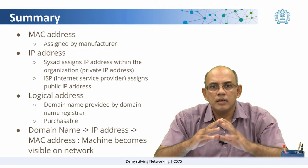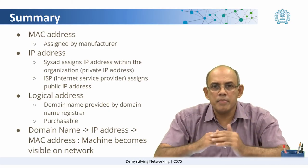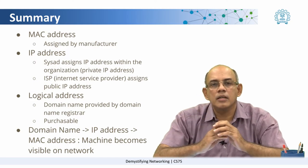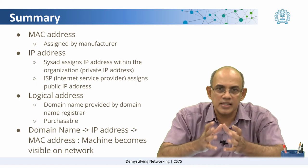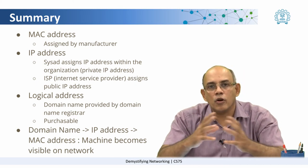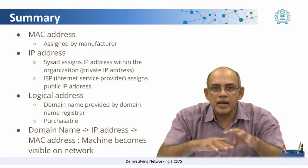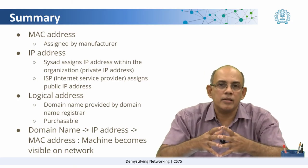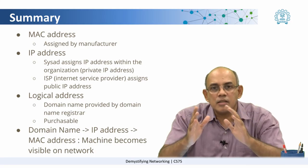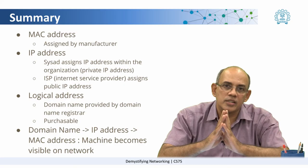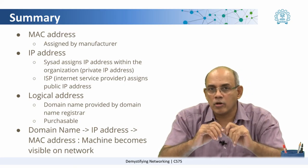You can refer to some of these textbooks, and there are also many videos available to get a more in-depth understanding of each of these concepts. To summarize: addresses are at three levels. The first is the MAC address, which is assigned by the manufacturer. Then there is the IP address. Two entities are responsible for the IP address: the system administrator of your organization, which might be your IT team, assigns the IP address within the organization as private IP addresses. Then there is the ISP, who assigns the public IP address, governed by an authority that decides IP address spaces and ranges for organizations.